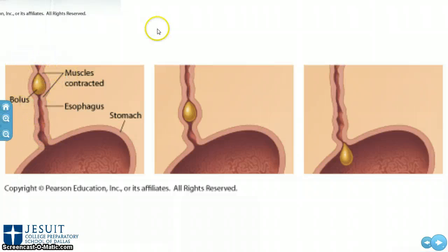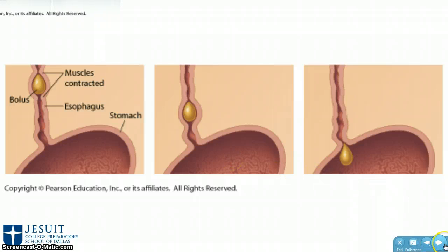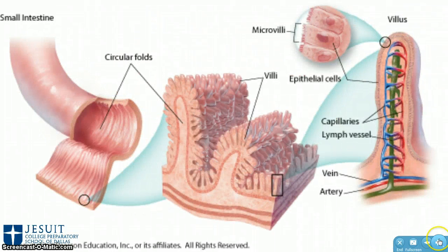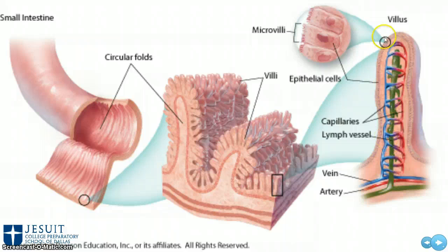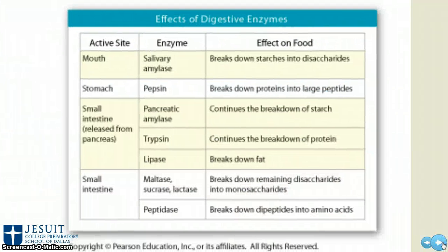Peristalsis is how things get moved through your digestive tract — these are wave-form contractions of your muscles. The muscles surrounding your esophagus and intestinal tract push food through. The same peristaltic muscle contractions move food into the small intestine and large intestine. The small intestine is the main site of nutrient absorption. If you zoom in on the intestinal tract, you can see folds with microvilli — extensions of the cell membrane that increase surface area for better contact with food and more efficient absorption. The circulatory system picks up those nutrients and puts them in circulation so all other cells can receive them.